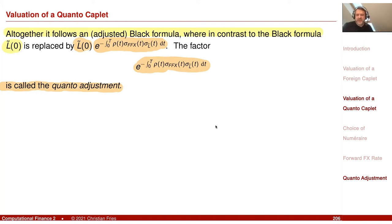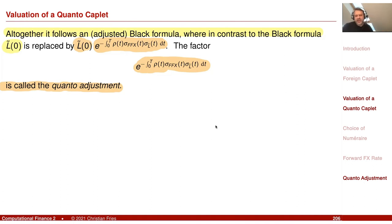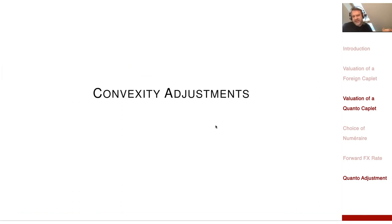We can immediately conclude that we get the same Black-Scholes formula with a slightly modified initial value. This modification is the Quanto adjustment. The conclusion is that we get an adjusted Black formula where, in contrast to the Black formula for the foreign Caplet, L̃ is replaced by L̃ multiplied with e^{−∫ rho·sigma_{FFX}·sigma_L̃·dt}. This is the Quanto adjustment. This general scheme — paying in some unnatural unit — will appear again, for example when we pay a forward rate at the beginning rather than the end of a period. That is related to a change of numeraire and a similar adjustment called convexity adjustments, which we cover in the next session.